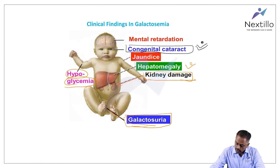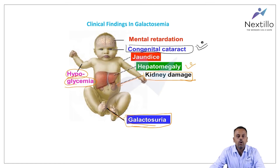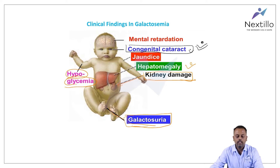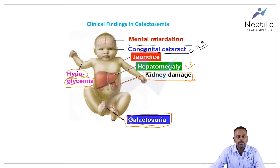To summarize, the clinical findings in galactosemia are: mental retardation, hepatomegaly, jaundice, kidney damage, hypoglycemia, and congenital cataract. Remember, it is a congenital cataract. Now we will see the biochemistry behind all these clinical findings — what are the reasons behind them.